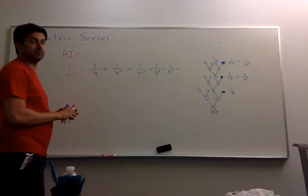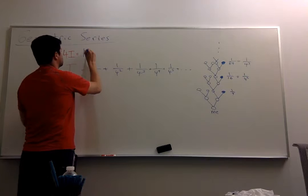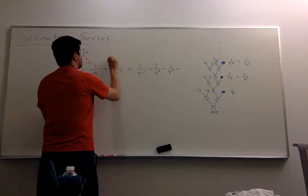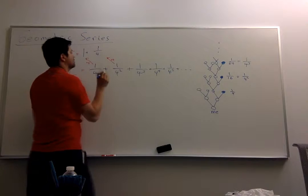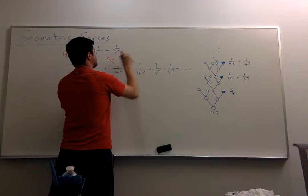Well, 1 quarter times 4 is 1. This is 1 quarter times 4. 1 quarter squared times 4 is 1 quarter. 1 quarter cubed times 4 is 1 quarter squared. Et cetera, et cetera.